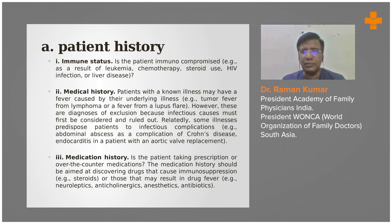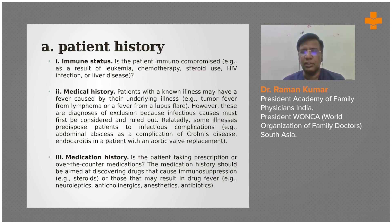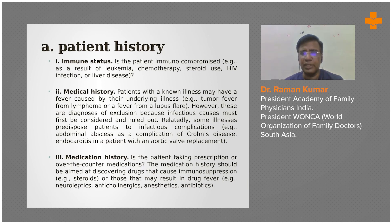Many times patients may not give due importance to associated symptoms, but these are very important. You have to take a thorough, system-wise history. Always ask about urinary symptoms — pain on passing urine, for example. The source of infection is very important. If the patient complains of body ache, clarify: is it muscle pain, bone pain, back pain, or headache? Also ask about dietary history — did they eat from outside — and travel history.